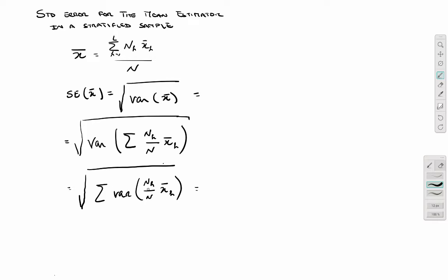And using now the fact that this is a constant, NH over N, I'll bring it outside of the variance. So this is the square root of the sum of NH squared divided by N squared times the variance of X bar H.